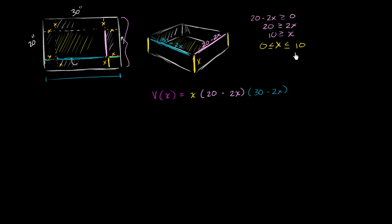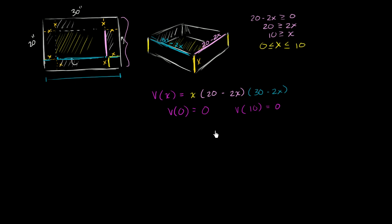Let's think about the volume at the endpoints of our domain. When x equals 0, the volume is 0 — there's no height. When x equals 10, the width is 0, so the volume is also 0. So somewhere in between x equals 0 and x equals 10, we should achieve our maximum volume. Before we do it analytically with calculus, let's do it graphically — I'll get my TI-85 out.